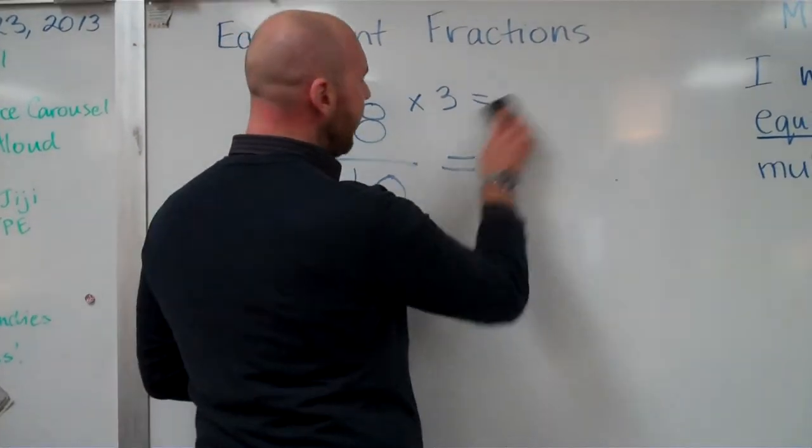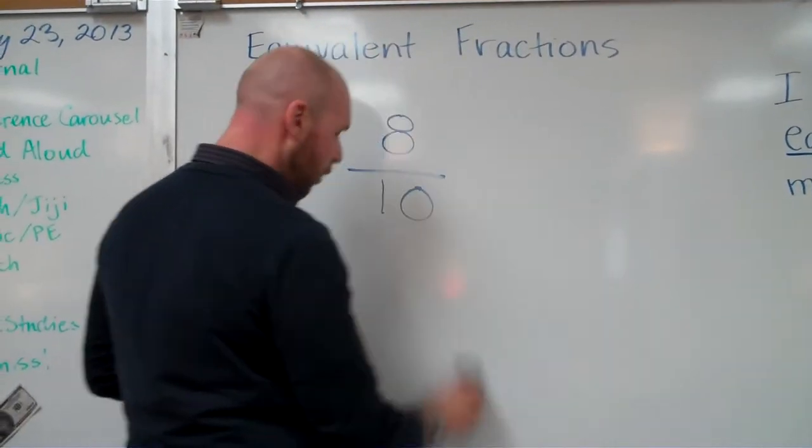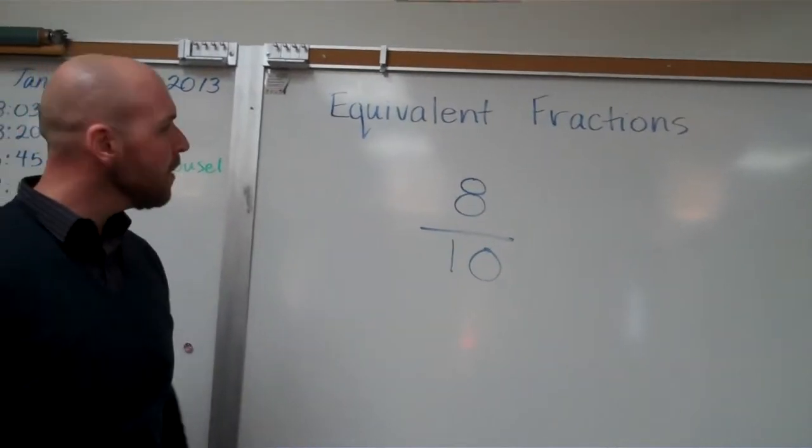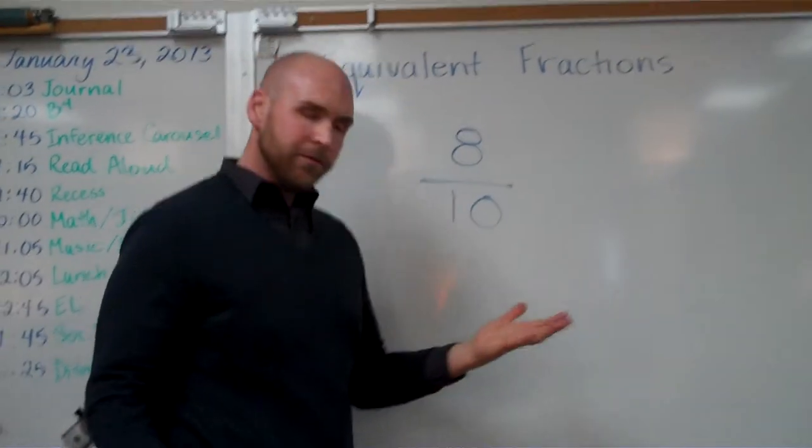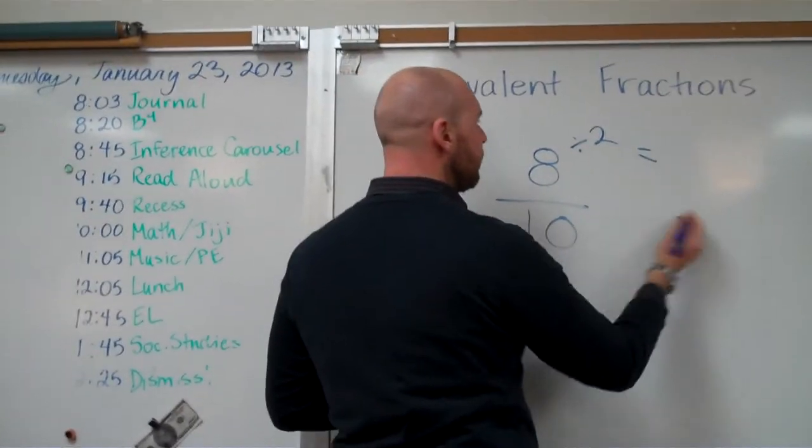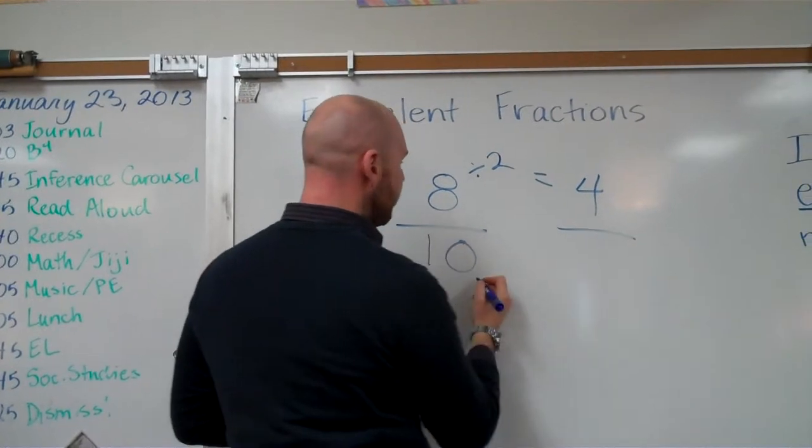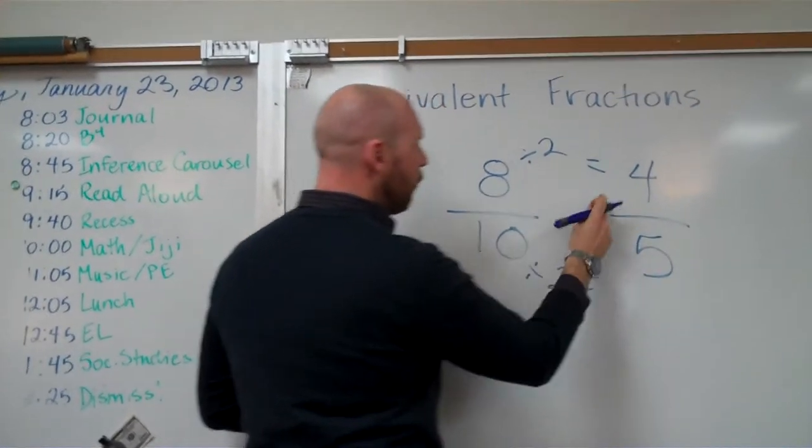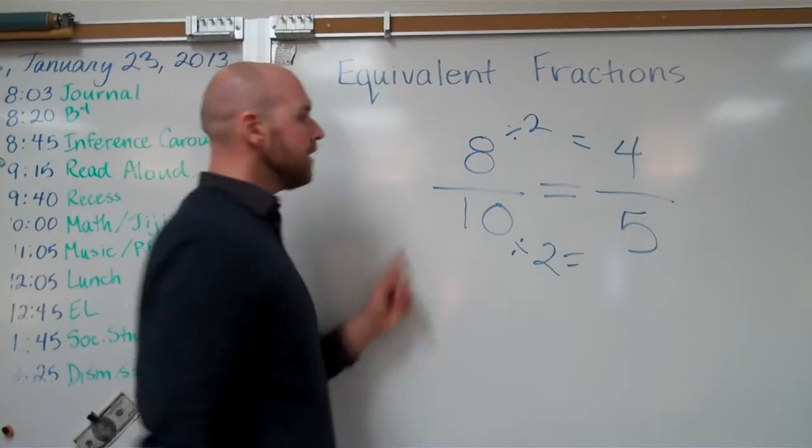But what if I want to go the opposite way? Well, same as before, I look for a factor that can divide into both evenly. I have to think about it. Well, it looks like two is going to work again here. Eight divided by two equals four. Ten divided by two equals five. Four-fifths is equivalent to eight-tenths.